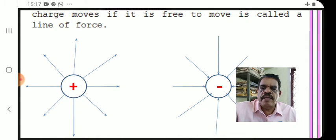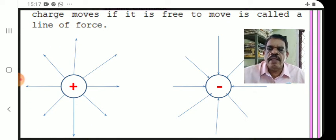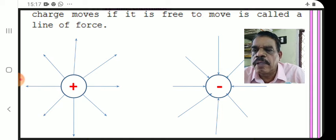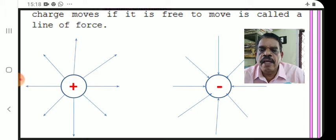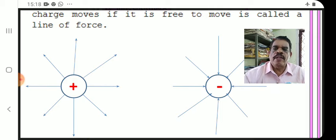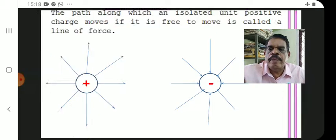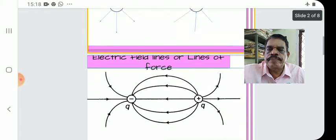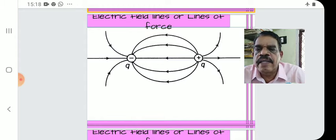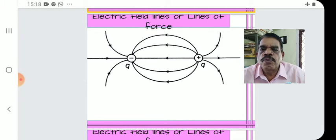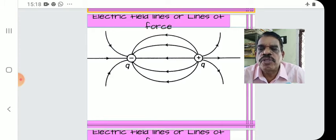For a positive charge, lines of force go outward, and for a negative charge, they come inward. Lines start from positive charge and end at negative charge. A dipole also produces an electric field — lines start from positive charge plus Q and end at negative charge, as shown in the dipole field figure.